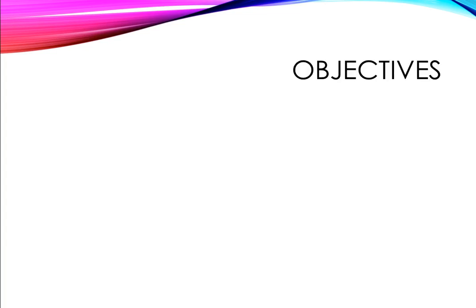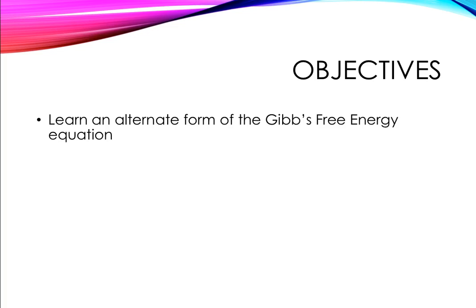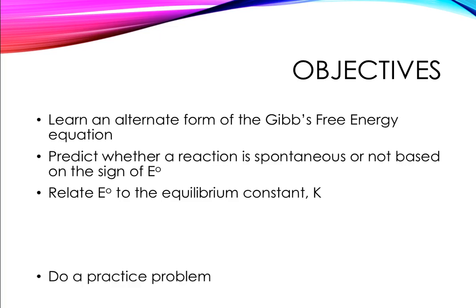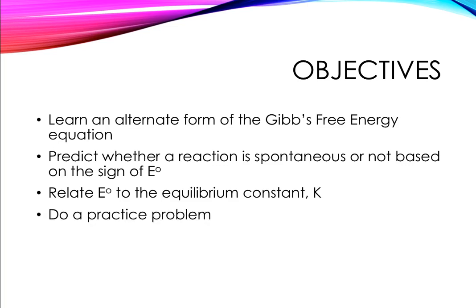So let's talk about what we want to accomplish in this webcast. The first thing I want to do is introduce an alternate form for the Gibbs free energy equation that really relates to redox reactions. We can use this to determine whether a reaction is spontaneous or not based on the sign of E cell. We're going to relate E naught to the equilibrium constant and we're going to do a practice problem — a whole set of skills that are really important for AP chemistry students because these questions show up a lot in different contexts.